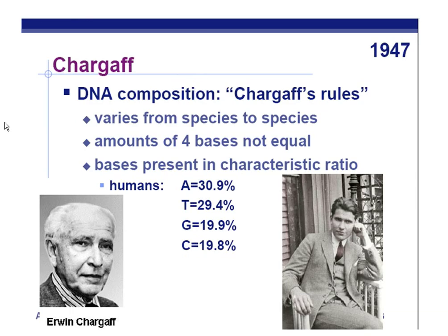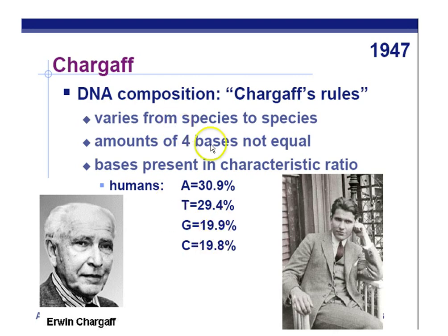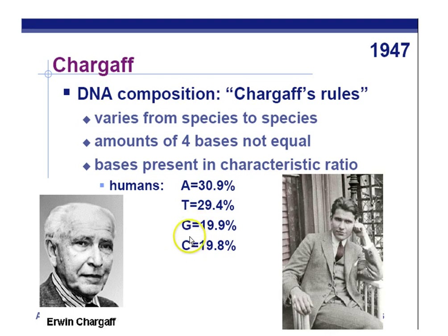Chargaff found interesting things about the ratio of bases in DNA. In humans, there's about 30% adenine and 30% thymine — nearly a one-to-one ratio of adenine to thymine, and a one-to-one ratio of guanine to cytosine. Chargaff's rules state that the four bases are not equal, but adenine and thymine are found in the same ratio, and guanine and cytosine are found in the same ratio. We now understand this results from complementary base pairing: guanine binds with cytosine and adenine binds with thymine on the two strands of DNA.